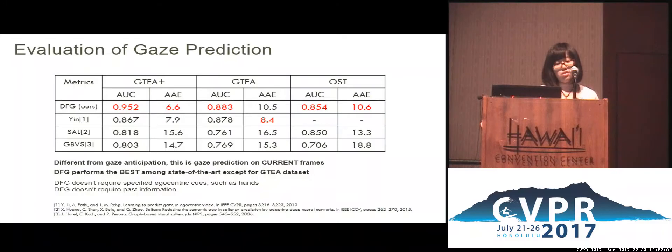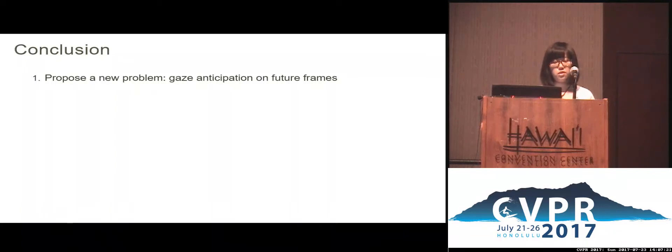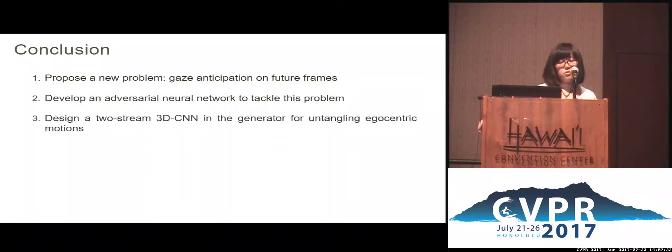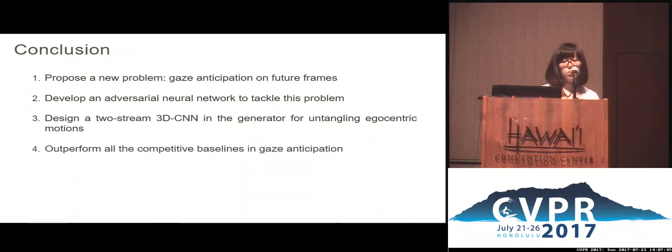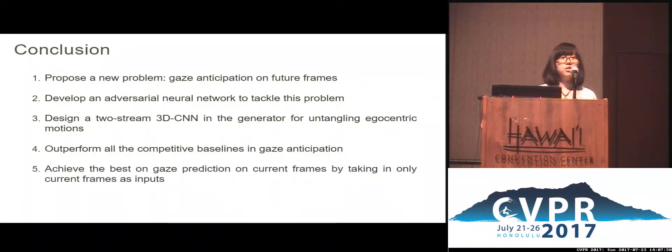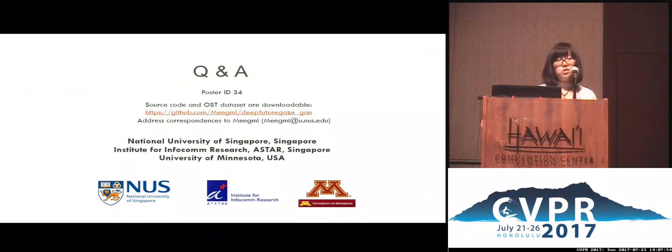It's worth noting that our method does not require any egocentric cues, neither does it require any past information, compared with all previous existing methods. To wrap things up, we have proposed a new problem on gaze anticipation on future frames. In order to tackle this new problem, we introduced the four factors that drive our architecture design, followed by the overview of our generative adversarial network-based architecture. In addition to its amazing performance on gaze anticipation, we also tested our algorithm on the existing gaze prediction problem on current frames, and our method is still the best. Feel free to download our source code and dataset. Our poster ID is 34. Feel free to come to our booth and we can discuss more about it. Thank you.